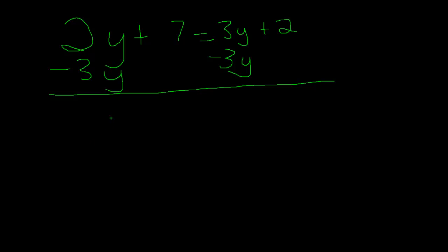So what we do now is we get negative y plus 7 equals 2. We don't have to write positive 2, we can just leave it as 2.